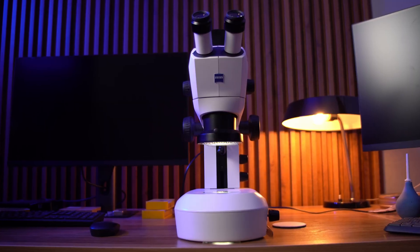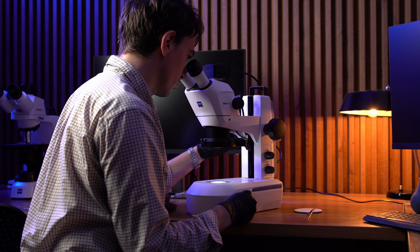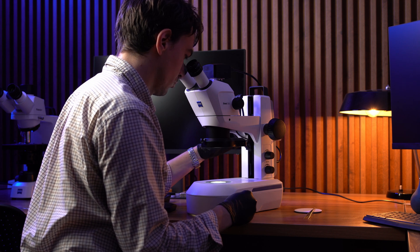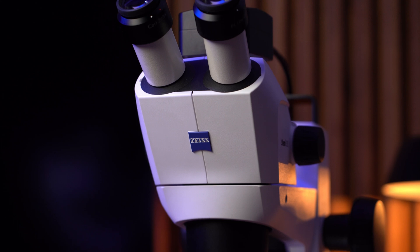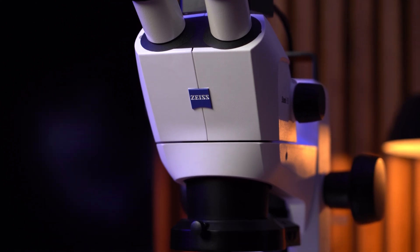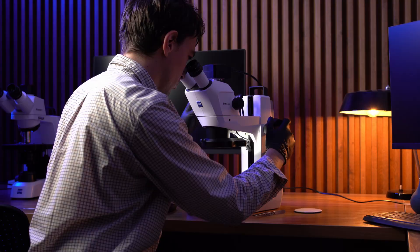A stereo microscope works kind of like your eyes. It actually has two separate optical paths, one for your left eye and one for your right. These two views are slightly different, just like what each of your eyes sees. So when you look through it with both eyes you get a 3D image. But if we record through a camera the image looks flat because we're only using one optical path, in this case the left side.